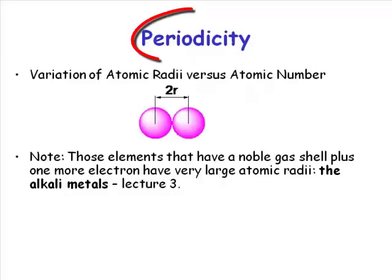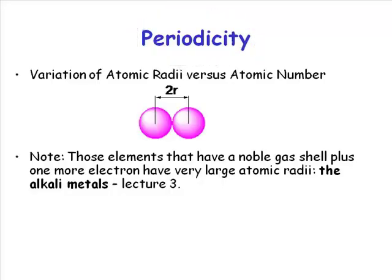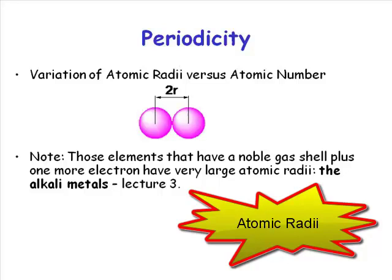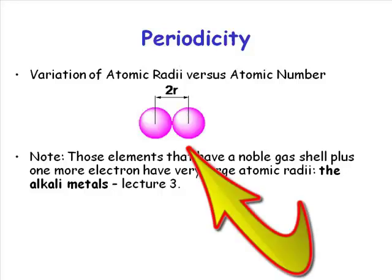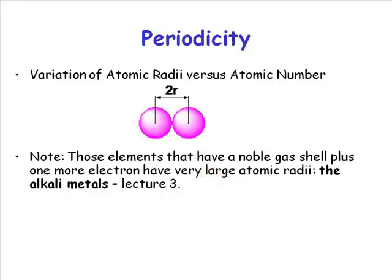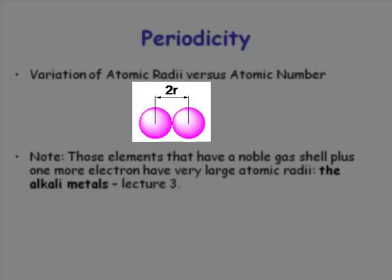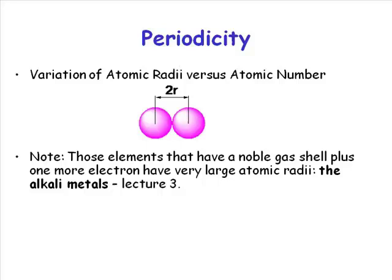I'm talking about periodicity and I'll be talking about expressions like atomic radii. The best working definition of an atomic radii comes about when you take two atoms of the same element adjacent to one another and you measure the separation between them. If you have something in its elemental form and you measure the separation between the nuclei of those two atoms, then that distance is twice the atomic radii.